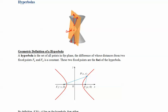A hyperbola is a set of all points in the plane, the difference of whose distance from two fixed points F1 and F2 is constant.